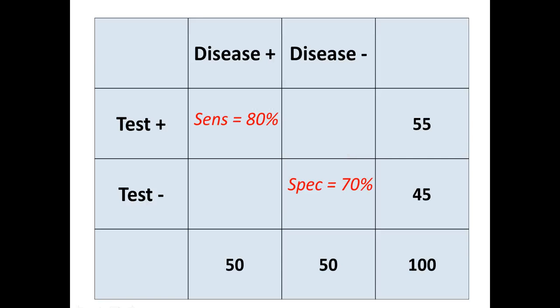Another limitation is related to precision. Our estimate of sensitivity was 80% and our estimate of specificity was 70%, but those are just estimates. In the real world, we'd be better off interpreting the confidence intervals. The confidence interval for our sensitivity estimate is 66% to 90% — fairly broad with only 100 people in our validation sample. For specificity, the confidence interval is 55% to 82%, which is also fairly broad.